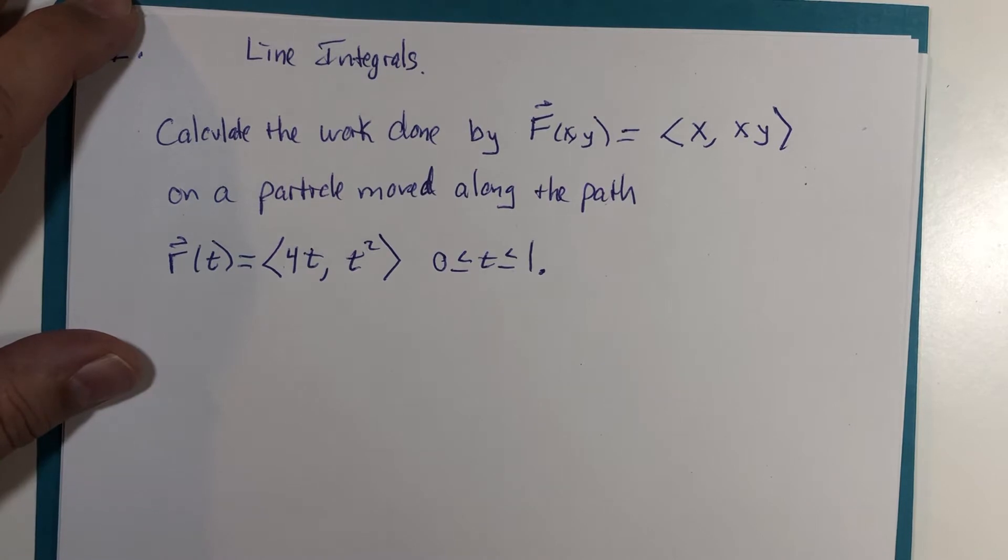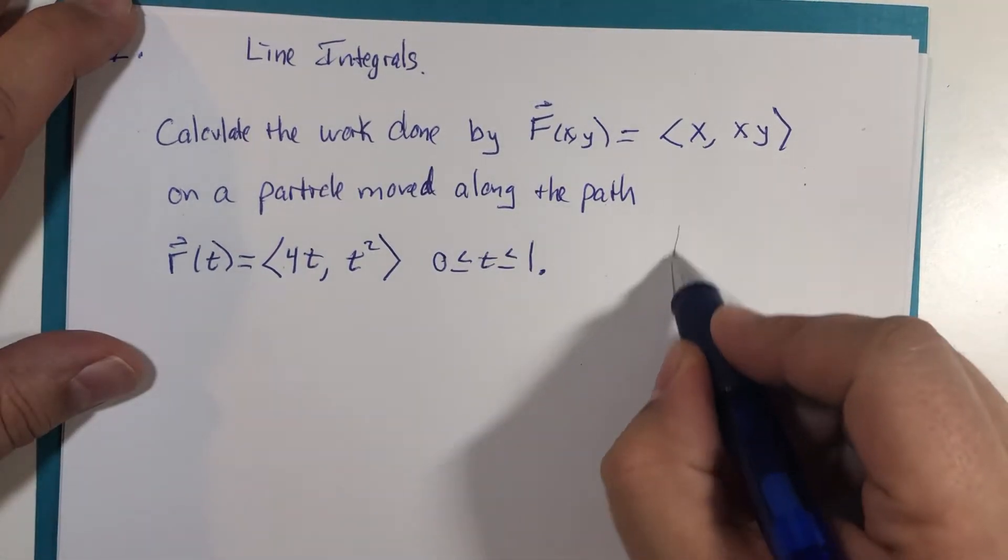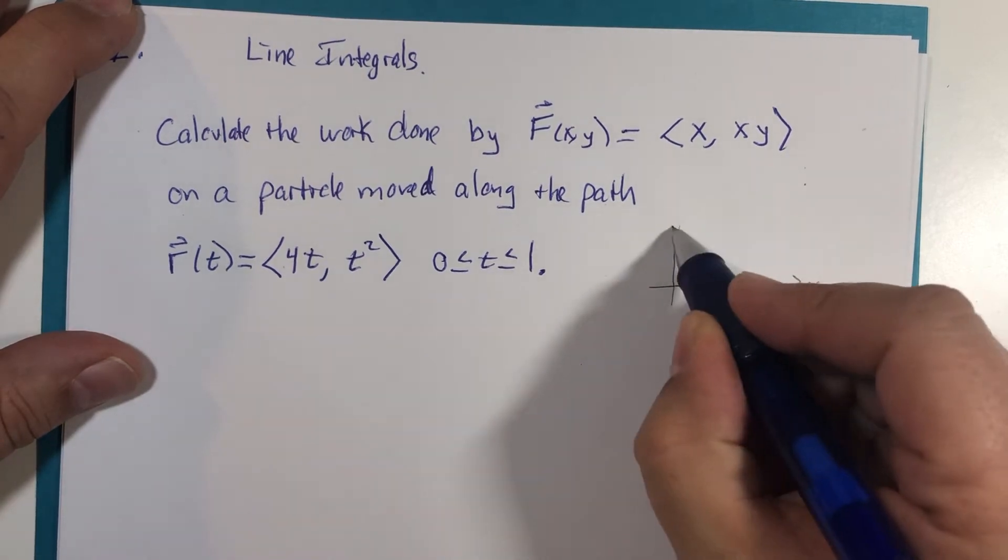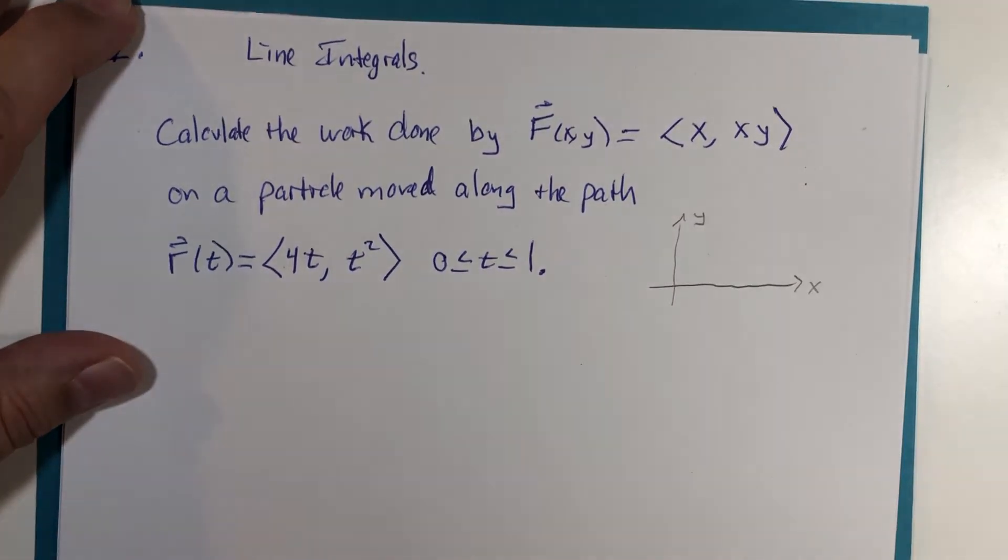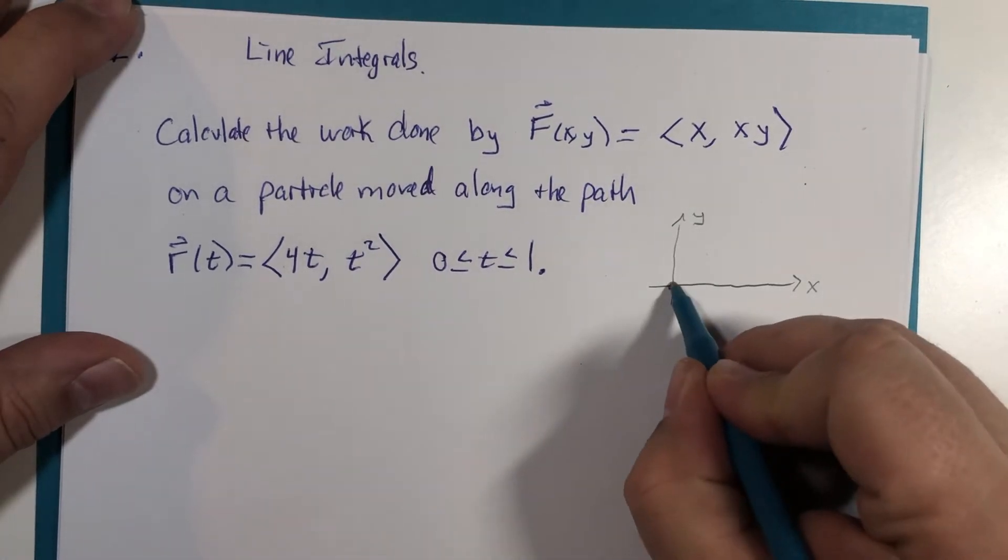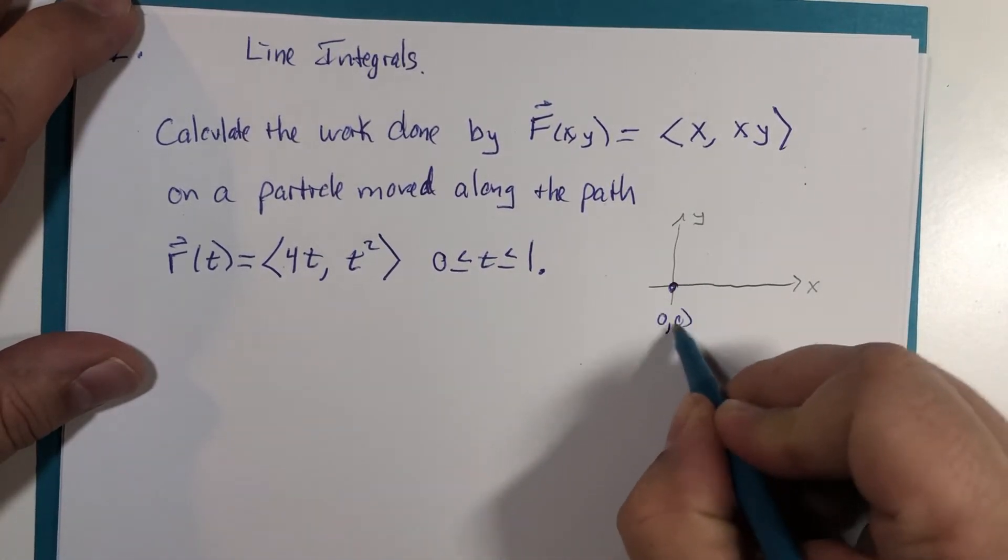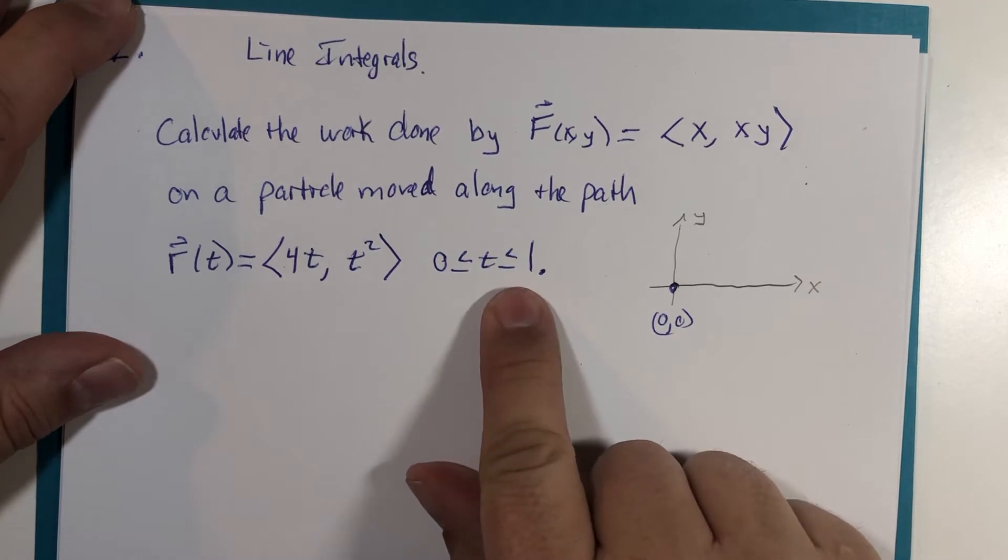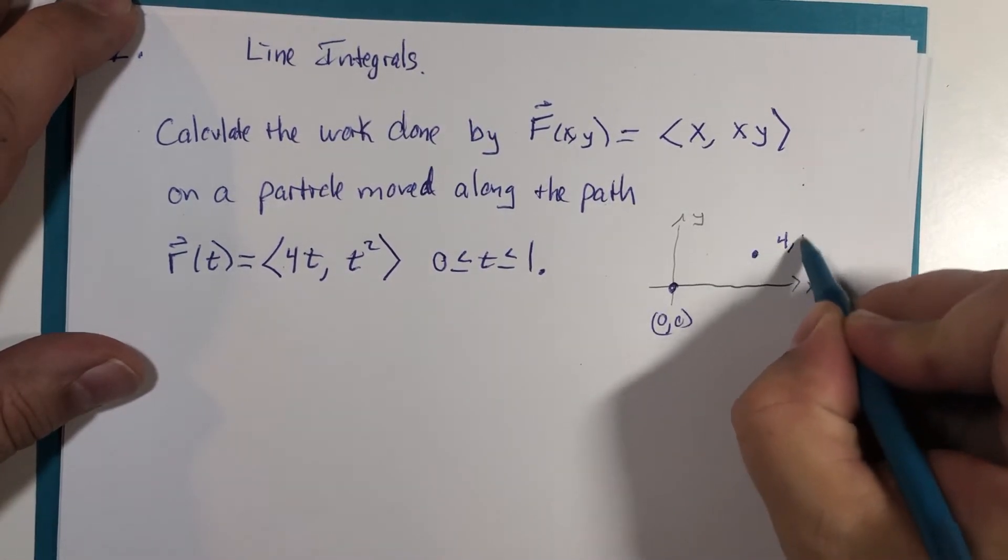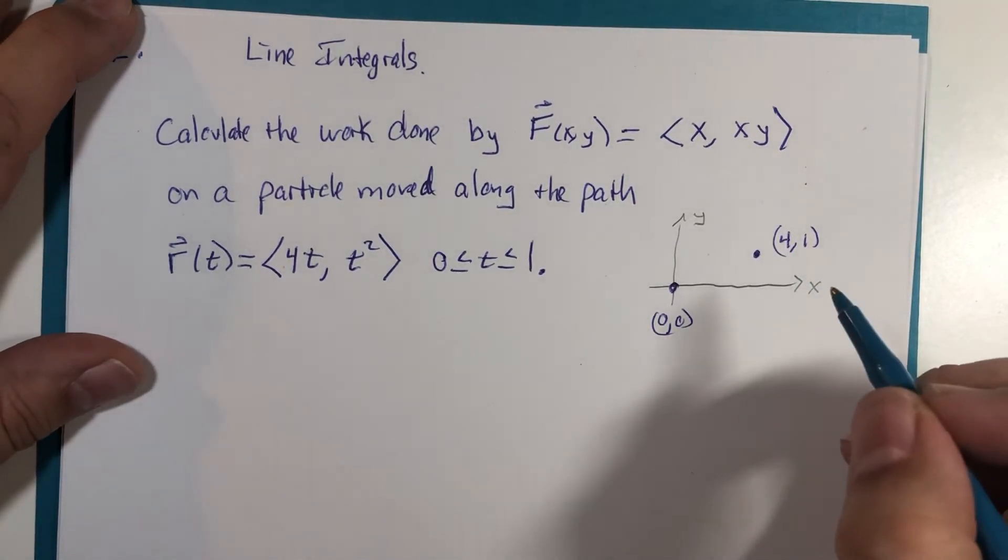Now if we were to sketch this path, at t = 0 we would be at the origin or (0,0), and at t = 1 we would be at the point (4,1).